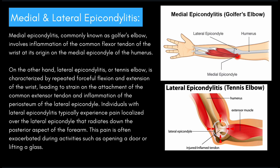Today I'd like to start off talking about medial and lateral epicondylitis. Medial epicondylitis is commonly known as golfer's elbow, which involves the inflammation of the common flexor tendon of the wrist at its origin on the medial epicondyle of the humerus. On the other hand, we have lateral epicondylitis, known as tennis elbow, which is characterized by repeated forceful flexion and extension of the wrist, leading to strain on the attachment of the common extensor tendon and inflammation of the periosteum.